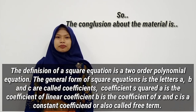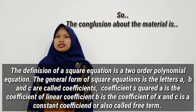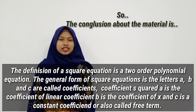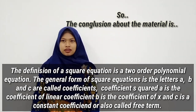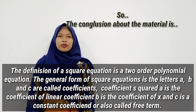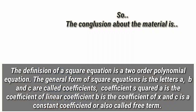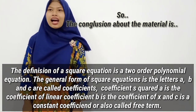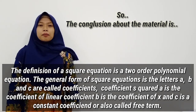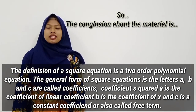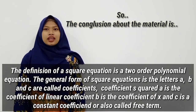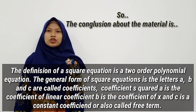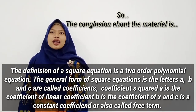So, the conclusion about the material is: the definition of a quadratic equation is a second-order polynomial equation. The general form of a quadratic equation uses the letters A, B, and C as coefficients. Coefficient A is the coefficient of x squared (the quadratic term), coefficient B is the coefficient of x (the linear term), and C is the constant term, also called the free term.